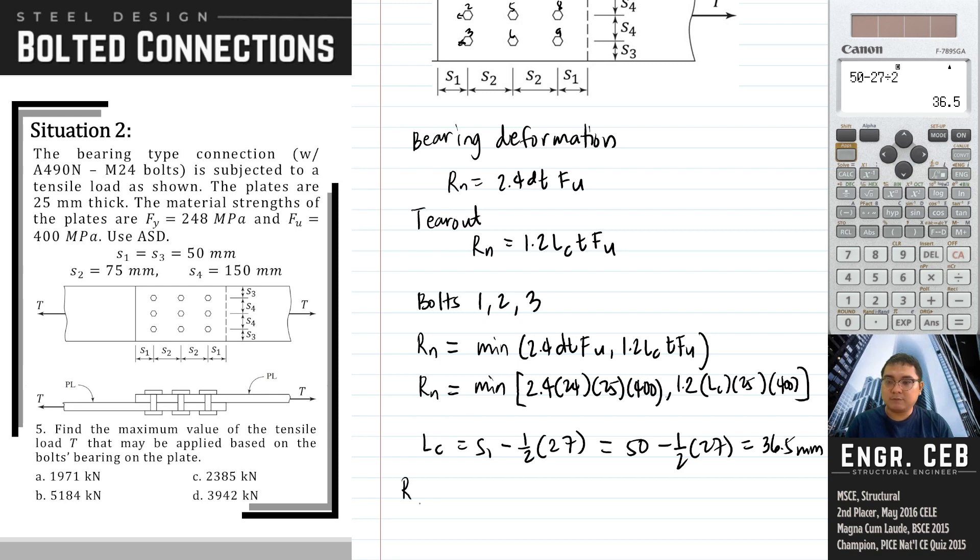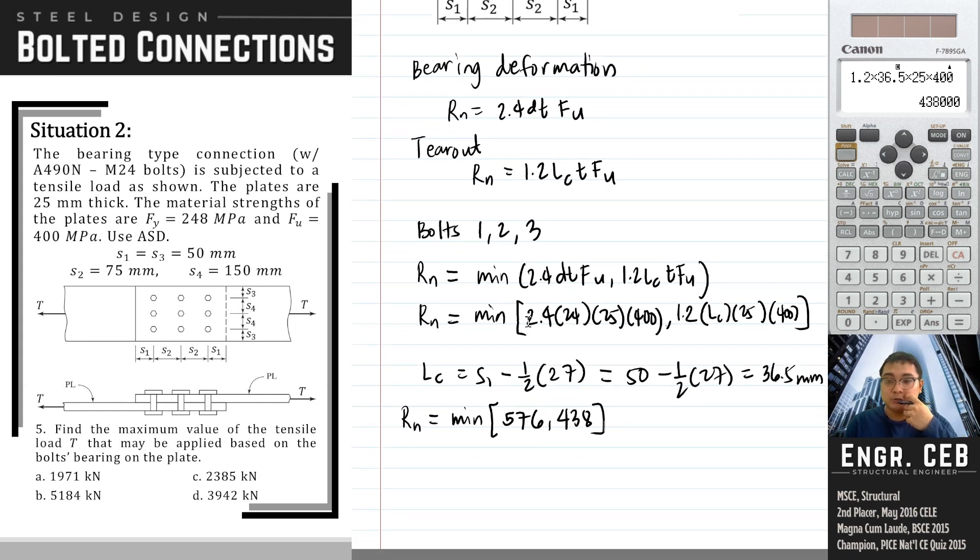So now let us compute the R N for bolts 1, 2, and 3. We can also go for 2.4 DT FU, so 2.4 times D times T times FU, that is 576,000. Convert it already to kilonewton. And then next is 1.2 LCT times T times FU, and that is 438,000. So we divide it by 1,000 to obtain the value in kilonewton. The minimum of the two is 438 kilonewton. Therefore, this is the bearing strength for bolts 1, 2, and 3.